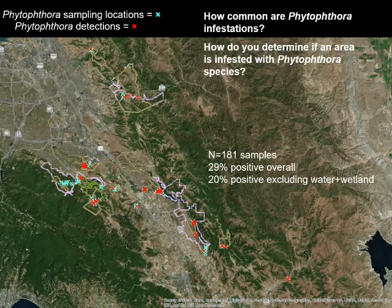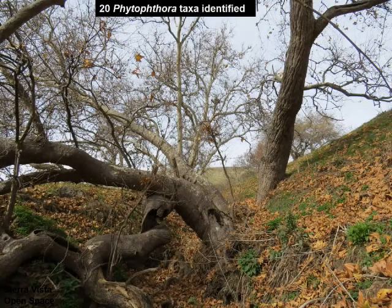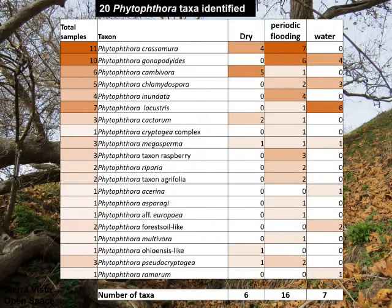20% if we only look at the upland samples, because some samples were from water and wetland areas. But even in upland areas, we were still picking up reasonable amounts of Phytophthora. We also identified a total of 20 different Phytophthora taxa, which is a reasonable amount of diversity considering what we were looking at.